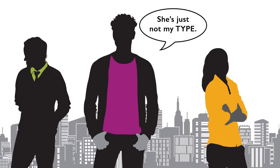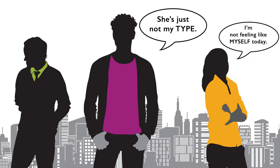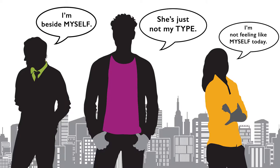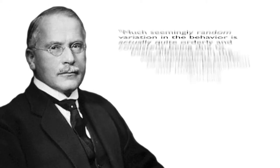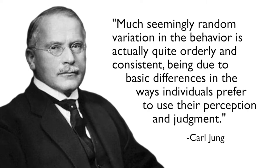Think about when you meet someone and find yourself thinking, 'They're not my type.' Or those days when you say, 'I'm not myself today,' or 'I'm beside myself.' All these statements reflect self-awareness that there are normal ways you act versus different ways that don't feel comfortable, unlike your normal self. Jung said that much seemingly random variation in behavior is actually quite orderly and consistent, being due to basic differences in the ways individuals prefer to use their perception and judgment.